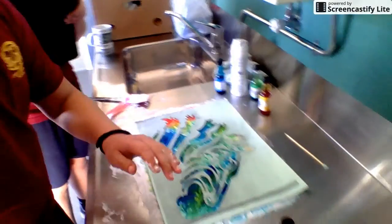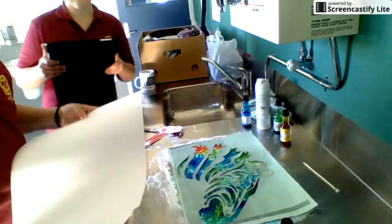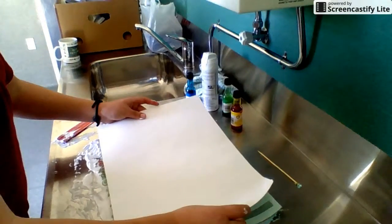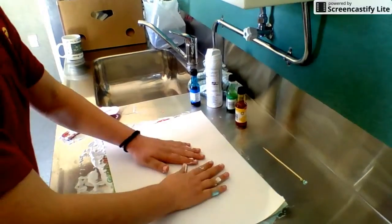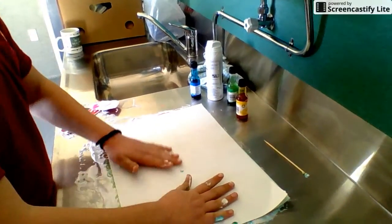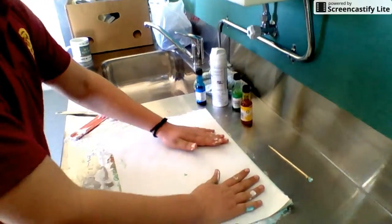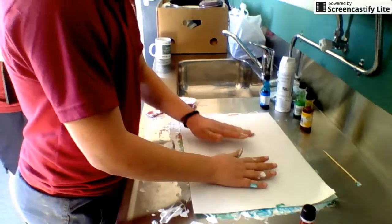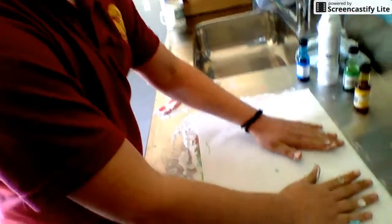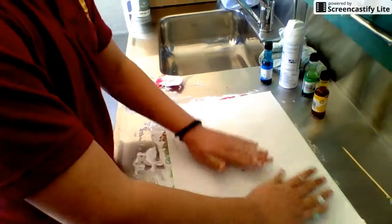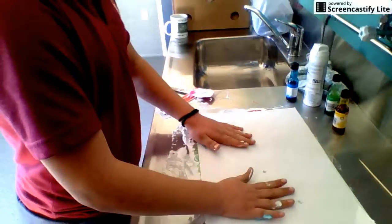And now, get this piece of paper set up and press down on it. And what that's doing is the shaving cream is going through the stencil and it's going onto the paper with the food coloring on, and then I'm going to lift this off.